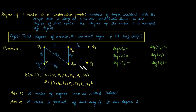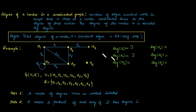For example, in this graph we have six vertices v1, v2, v3, v4, v5, and v6. The degree of vertex v1: three edges are incident with v1, so degree is three. Degree of vertex v2 is again three, as three edges are associated with it. Degree of vertex v3 is one, since only one edge is incident with v3.